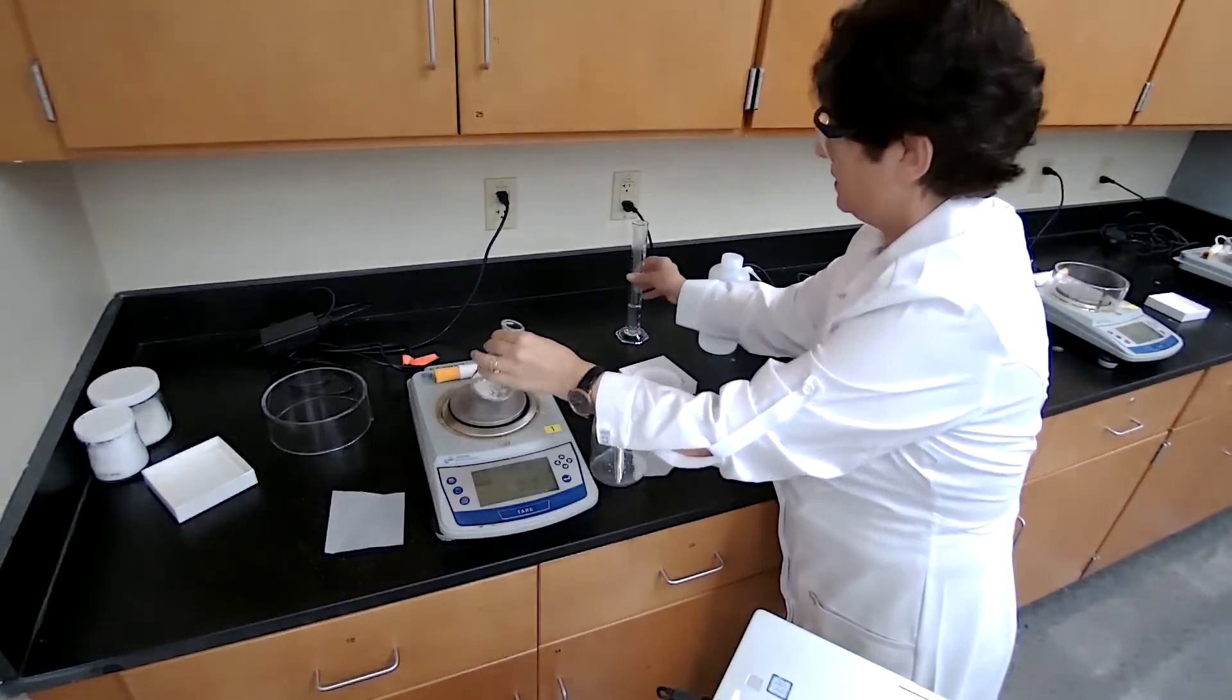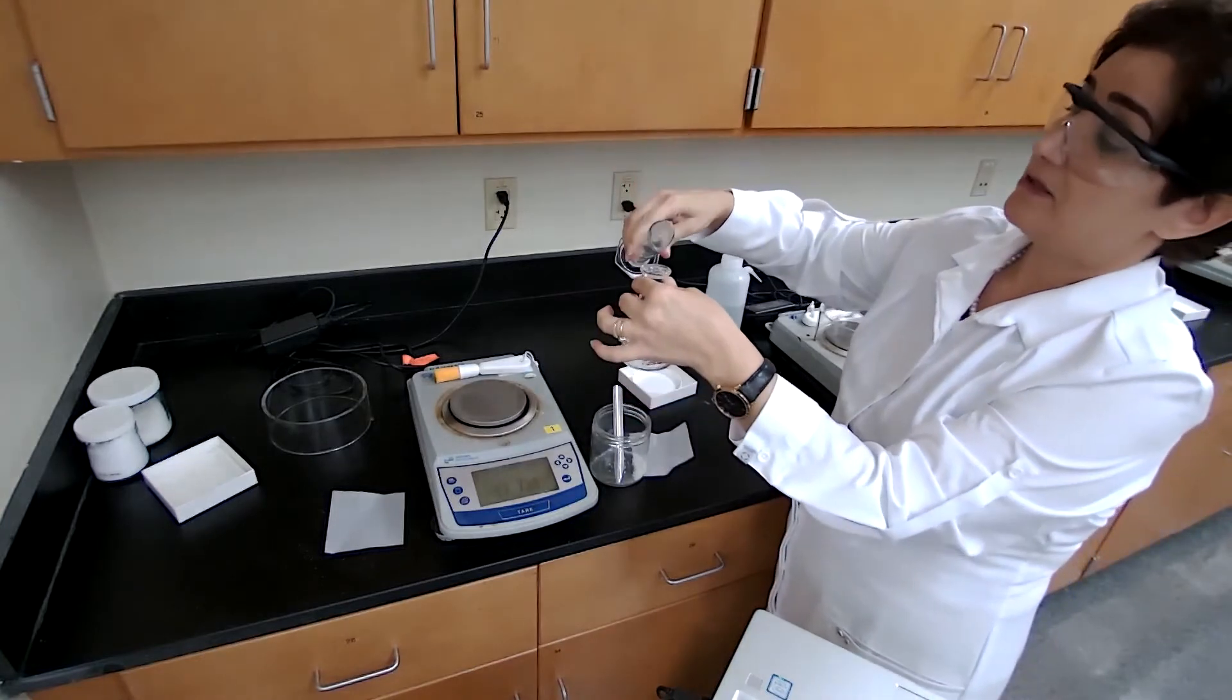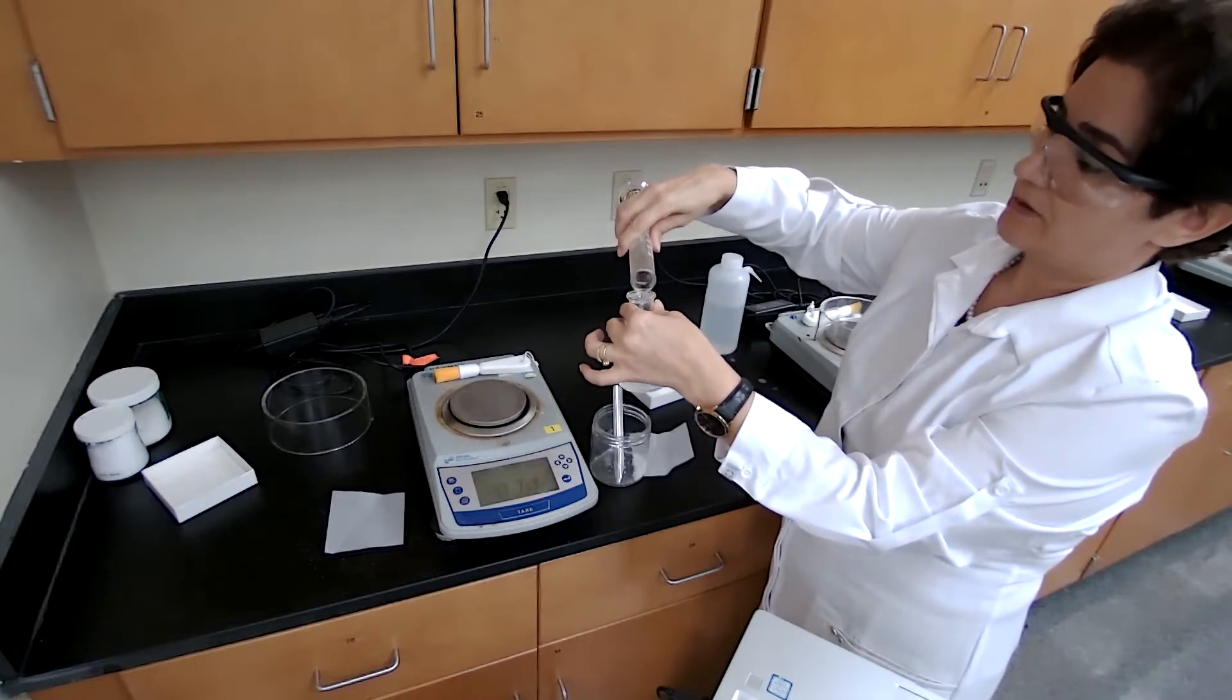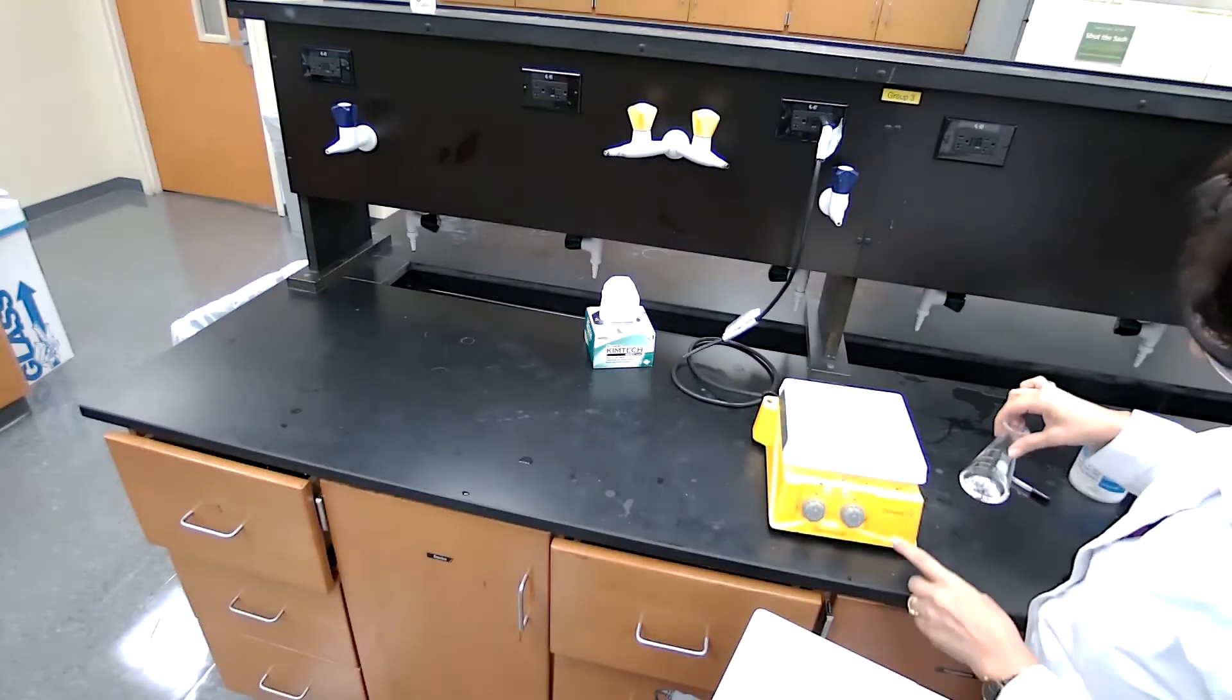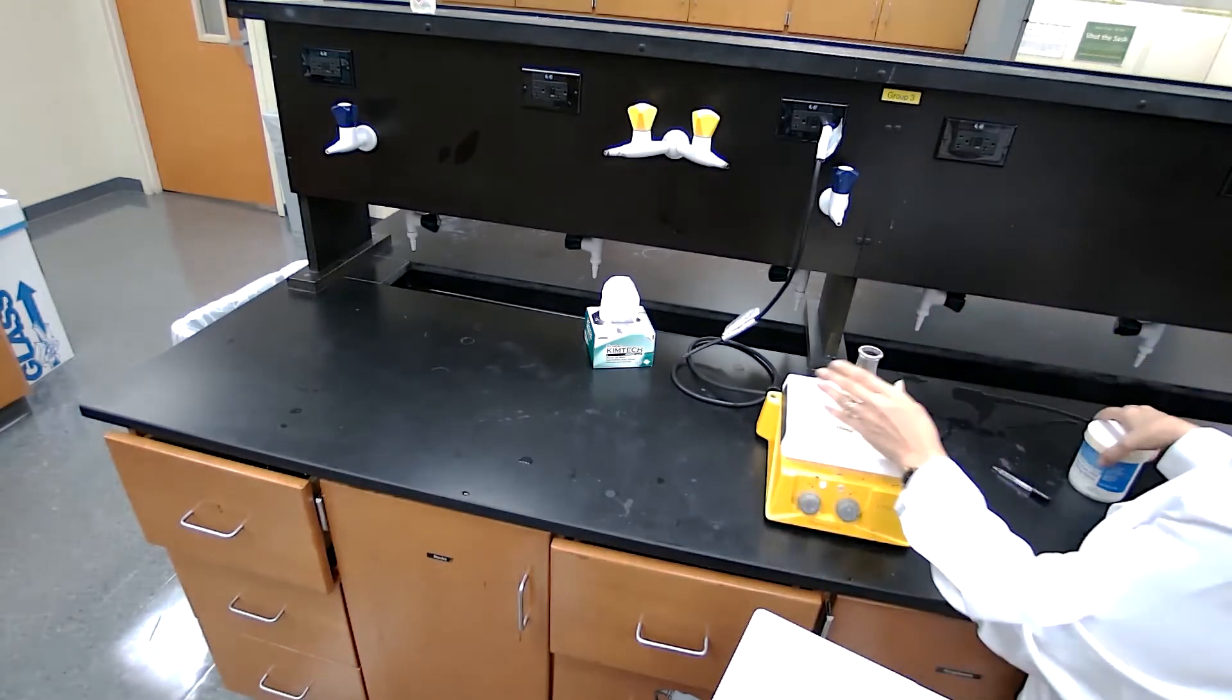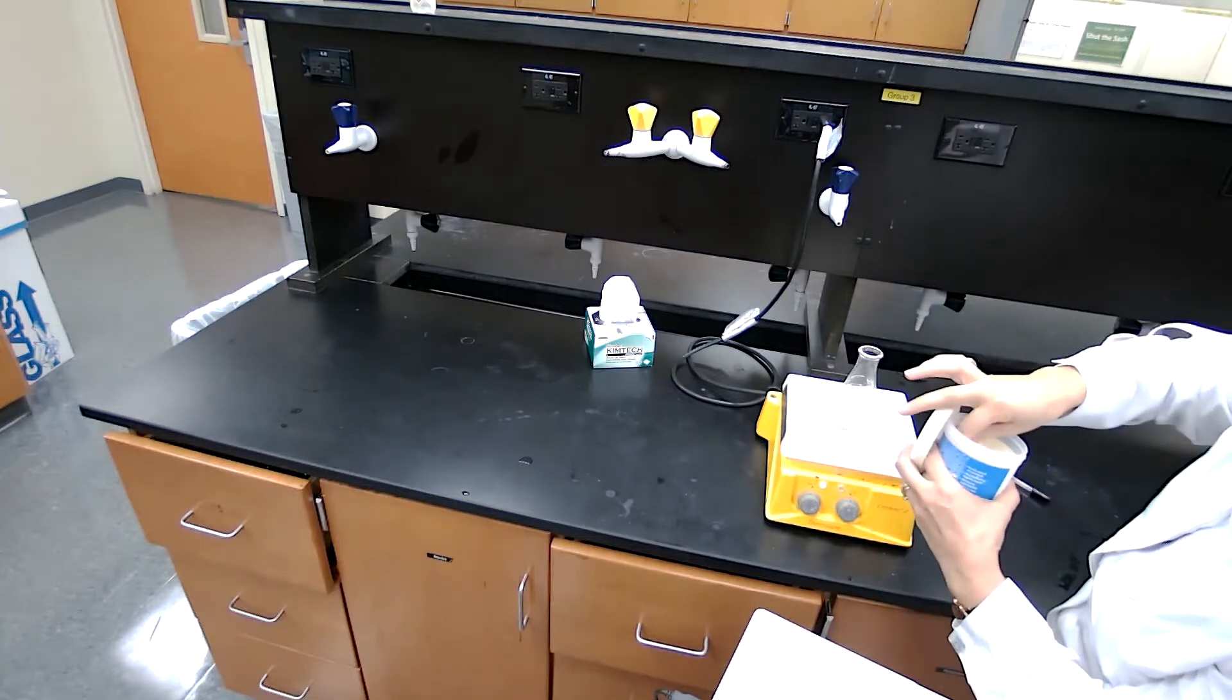I am adding 30 milliliters of our crystallization solvent, which we know at this point is water. After adding the 30 milliliters of water, I am going to add a few pieces of boiling chips.